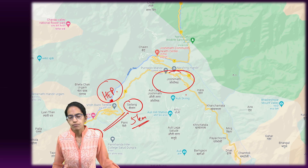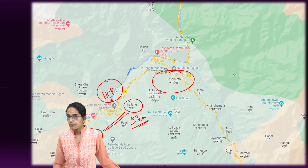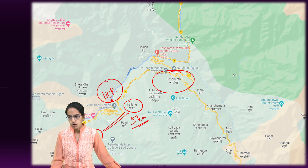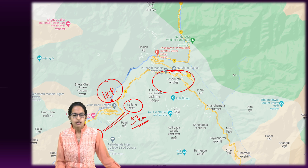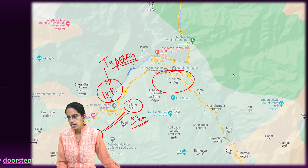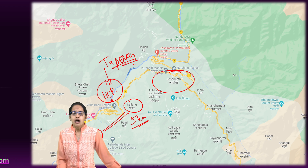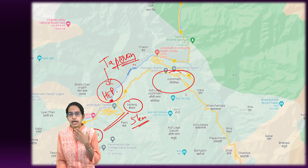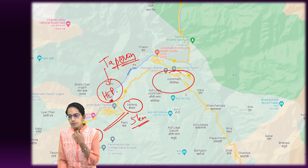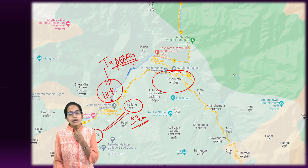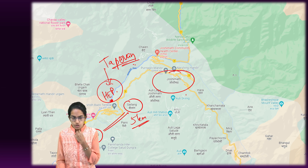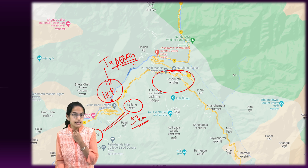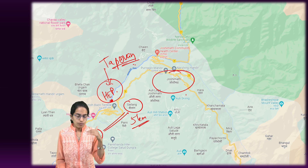There was a big debate when the Rishiganga power project collapsed. When construction on the NTPC Tapovan Vishnugarh project started, there were two aquifers and one of those aquifers got punctured. This puncture of the aquifer created a major issue nearly 10 years down the line.